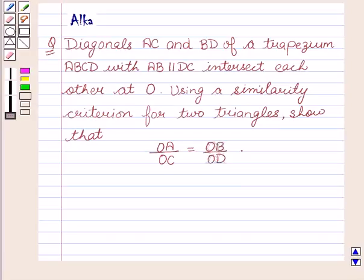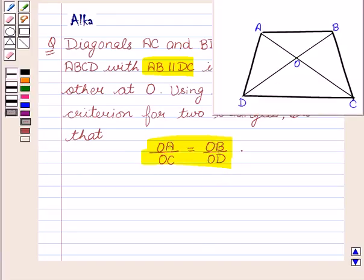Hello friends, welcome to the session. I am Alka. Let's discuss a given question: diagonals AC and BD of a trapezium ABCD with AB parallel to DC intersect each other at O. Using a similarity criterion for two triangles, show that OA/OC = OB/OD. Here is the figure according to the question.